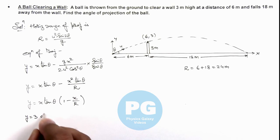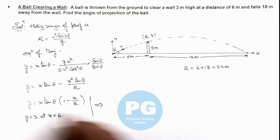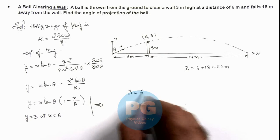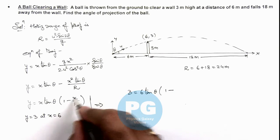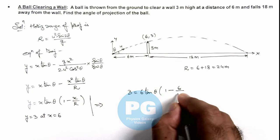Here if we substitute y equals 3 at x equals 6, then you can see the result is giving us 3 equals 6 tan theta multiplied by 1 minus x by R. Here x is taken as 6 and the range is 24.